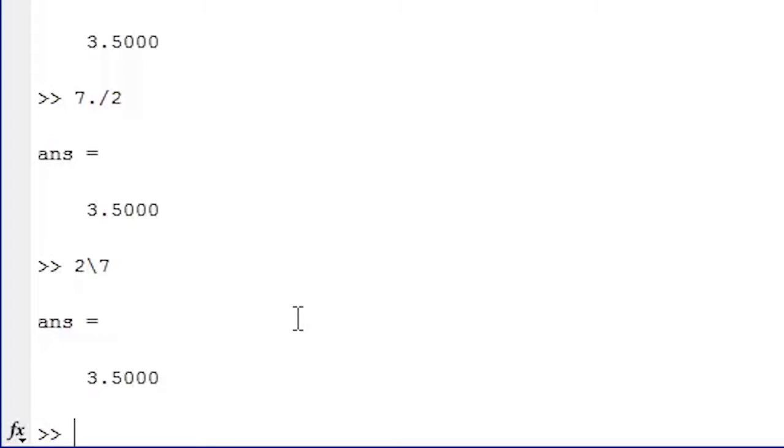Likewise, if we use the dot backslash operator, we type two dot backslash seven. Seven is still on the uphill side of the division operator, so we're still dividing seven by two, and our result is 3.5 again.